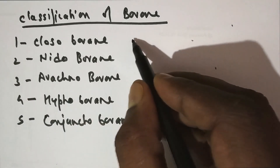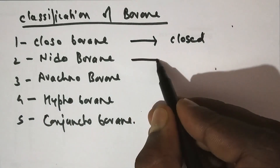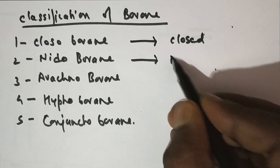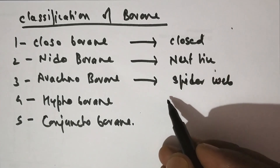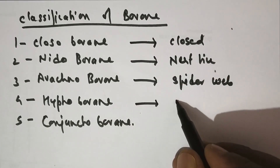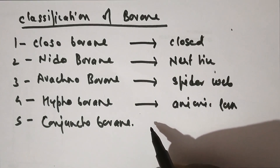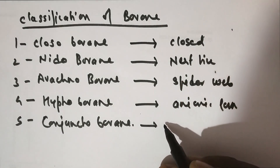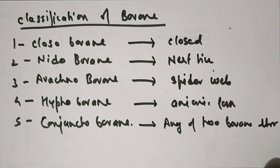For closo-borane, its geometry is closed-type. For nido-borane, the geometry or general structure will be nest-like. For arachno-borane, its structure will be spiderweb-like. For hypho-borane, it will be the anionic form. And for conjuncto-borane, its structure will depend on any of the two above boranes — it is a mixture of two borane structures.